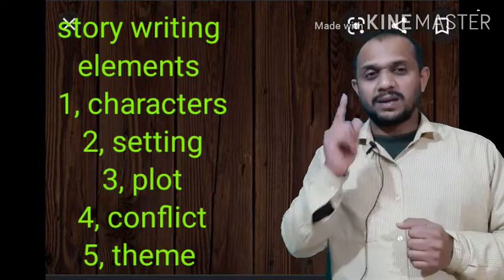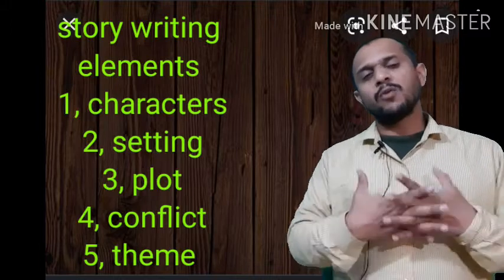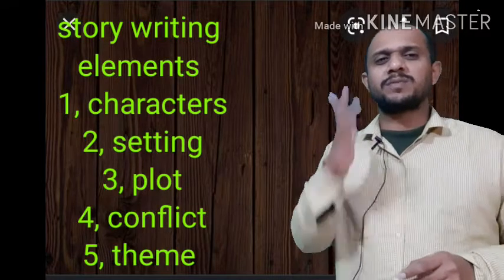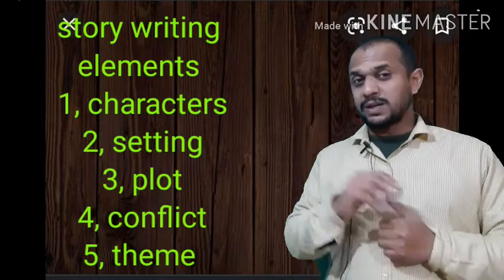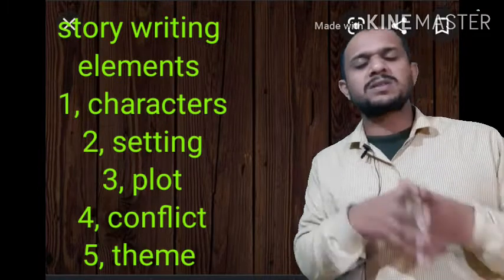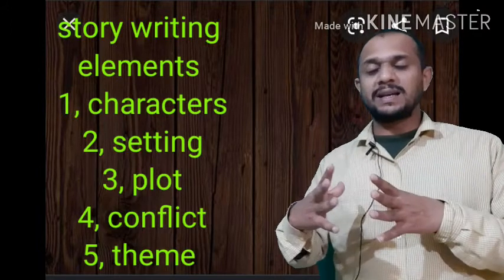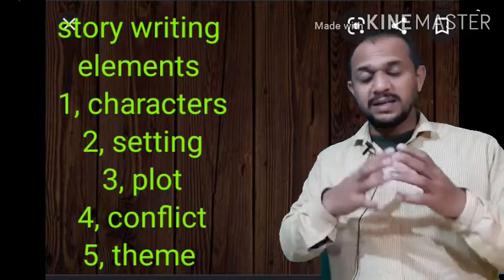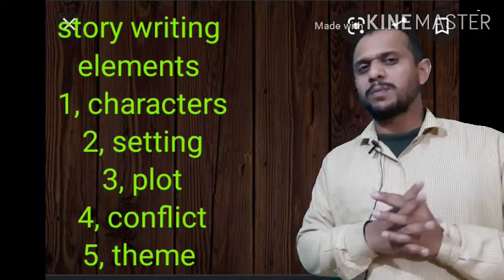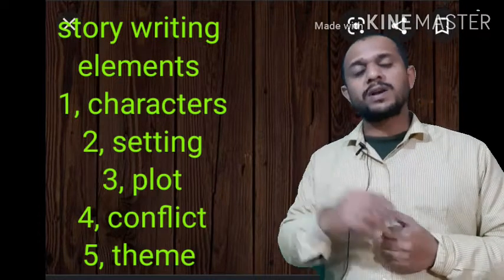Now we'll see the most important elements of story writing. Number one: characters. Characters play a very important role in story writing — if you have a strong character, obviously your story will be impressive. Number two: setting. The setting of the story should be clear and distinct. Number three: plot. The plot must be there; we should create a plot that makes our story interesting and impressive — it needs thrill, amazement, and surprise.